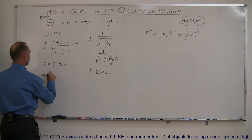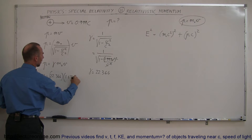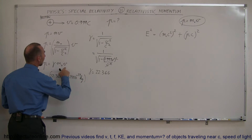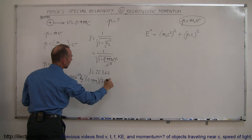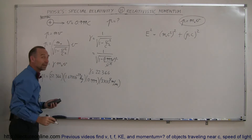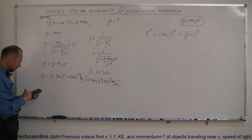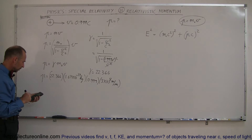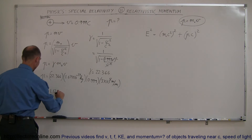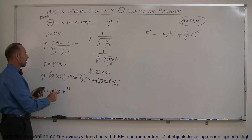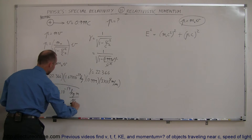So, the momentum equals 22.366 times the rest mass of a proton, which is 1.67 times 10 to the minus 27 kilograms, times the velocity 0.999c, which is 3 times 10 to the 8 meters per second. That gives us the relativistic momentum: p equals 1.12 times 10 to the minus 17 kilograms meters per second.